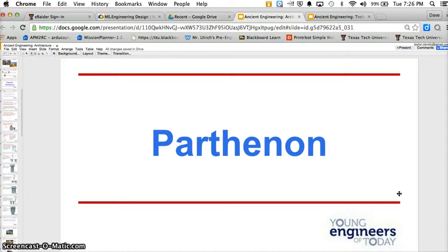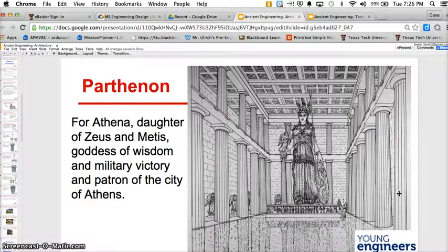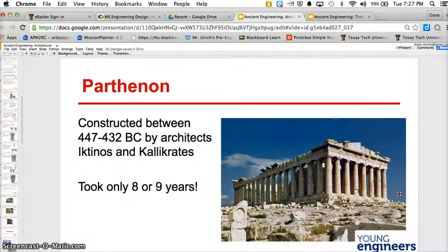Parthenon. Located in Athens on the hill known as the Acropolis, which translates roughly as the High City. For Athena, daughter of Zeus and Metis, goddess of wisdom and military victor and patron of the city of Athens. Athena was born from the forehead, the skull of Zeus. The thing I want to point out here is its construction years. It only took eight or nine years. It's very impressive here.